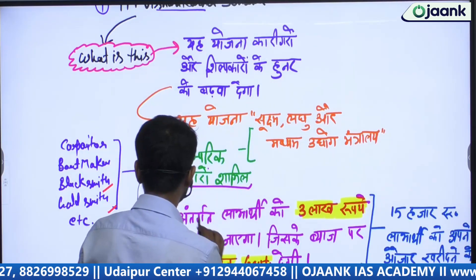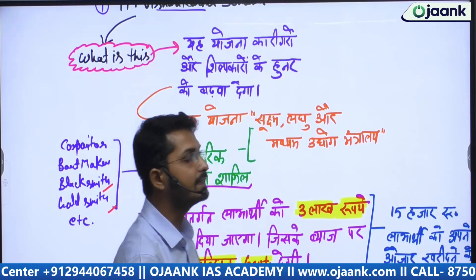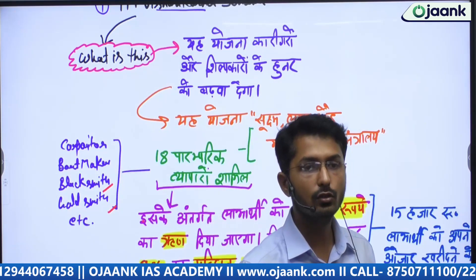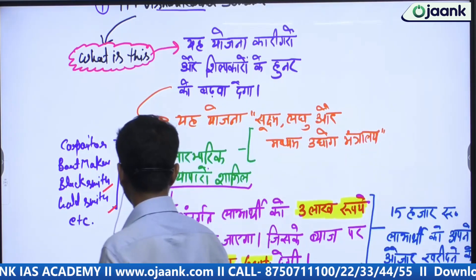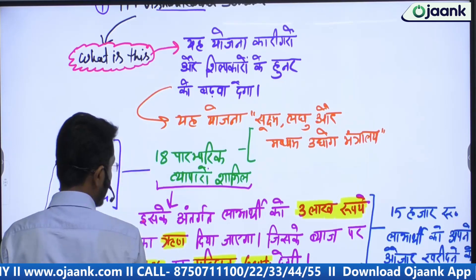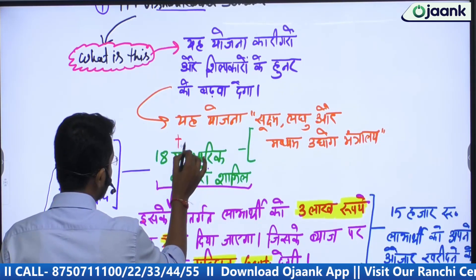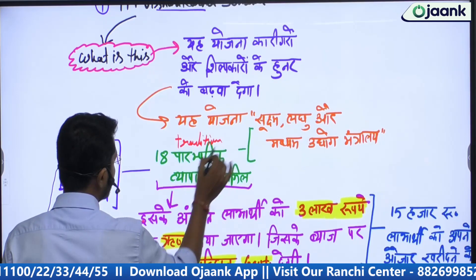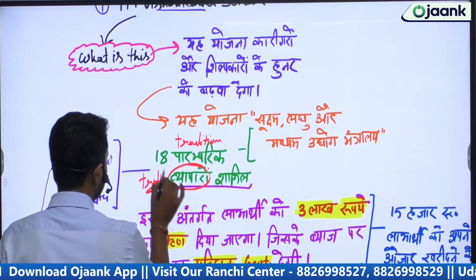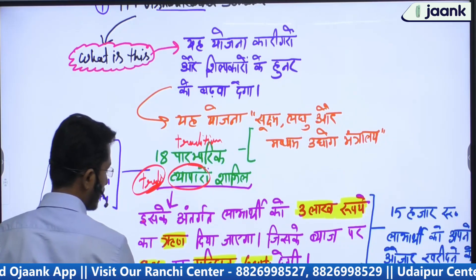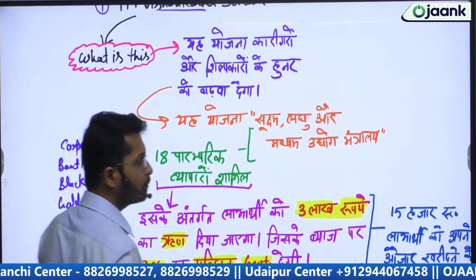This scheme was brought by the Sukshma, Laghu aur Madhyam Udyog Mantralaya — that is, the Ministry of Micro, Small and Medium Enterprises (MSME Ministry). In this scheme, 18 traditional trades have been included — 18 Paramparik Vyapaaron ko shamil kiya gaya hai. This is a fact to remember, important for prelims as well. These 18 traditional trades include carpenter, boat makers, and more.